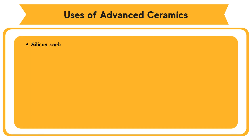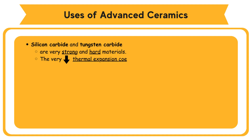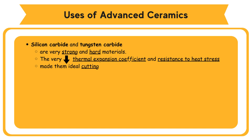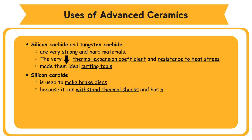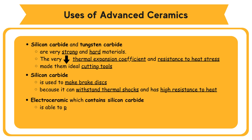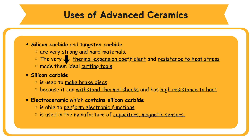Silicon carbide and tungsten carbide are very strong and hard materials. Their very low thermal expansion coefficient and resistance to heat stress make them ideal cutting tools. Silicon carbide is used to make brake discs because it can withstand thermal shocks and has high resistance to heat. Electroceramic, which contains silicon carbide, is able to perform electronic functions and is used in the manufacture of capacitors, magnetic sensors, and optical modulators.